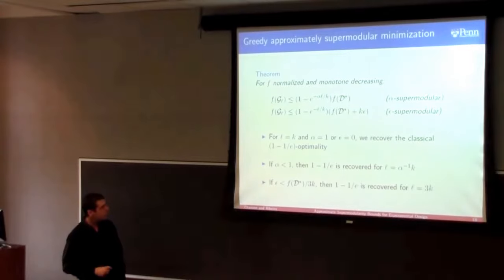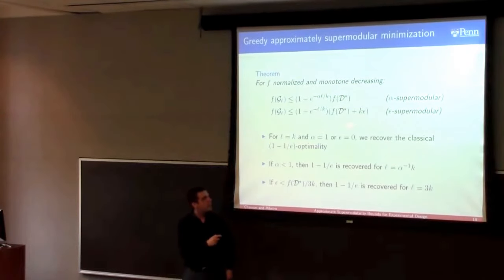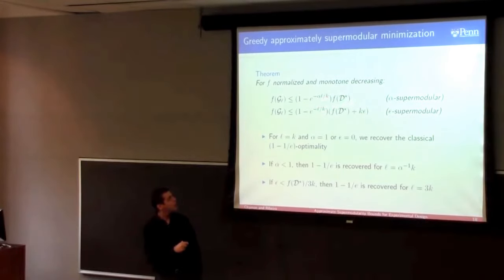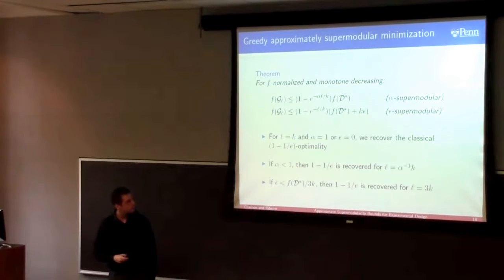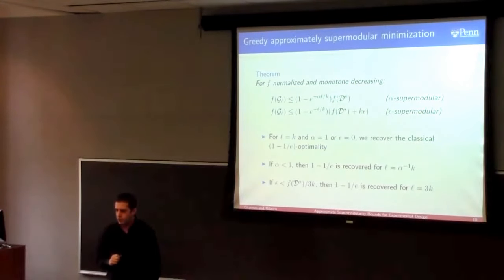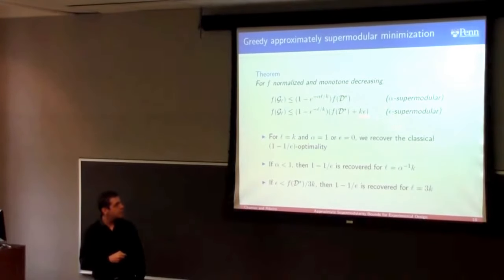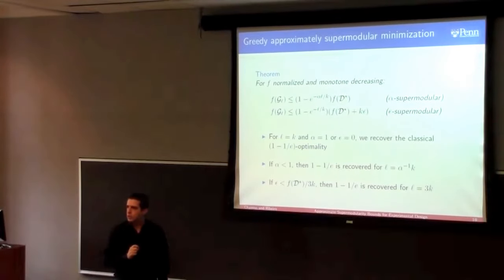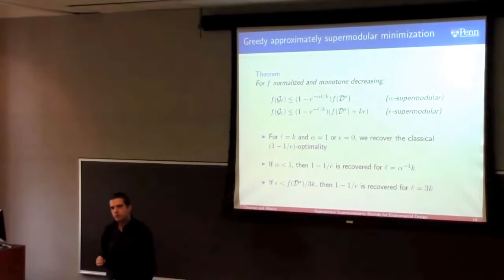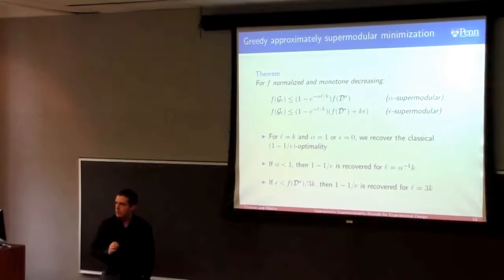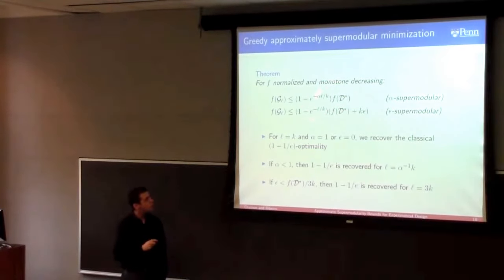We can get a similar result for epsilon, though it gives only an additive guarantee rather than a multiplicative one. The epsilon supermodularity is convenient because epsilon is easy to calculate — there is a homotopy-based technique that works for any function. Alpha is trickier: it depends on the specific function you're looking at, requiring more work to compute but yielding better theoretical guarantees.